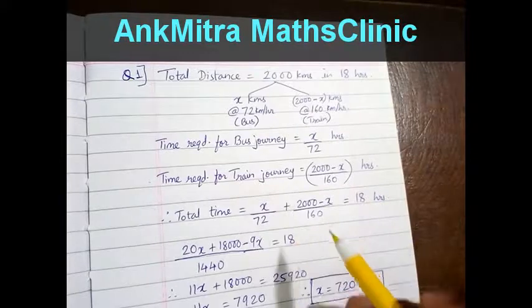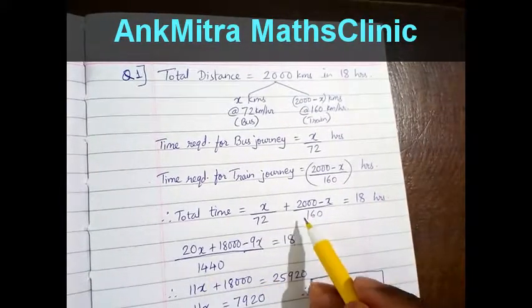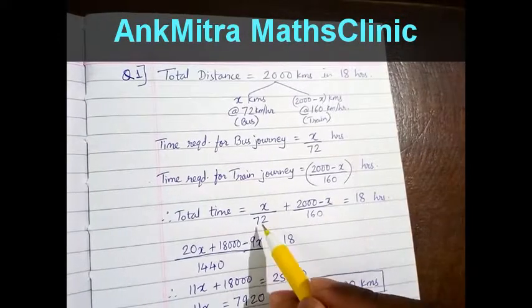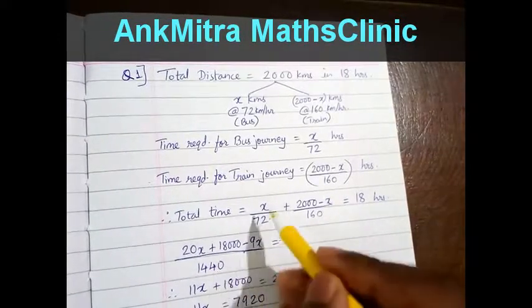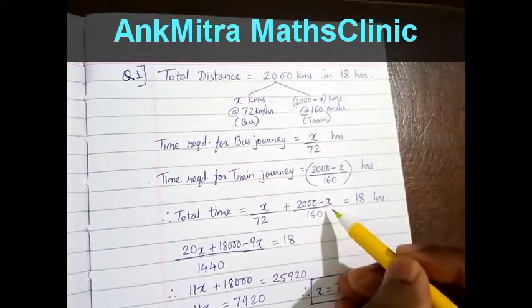To solve this we need to first bring this to a common denominator which comes to 1440. So to reach 1440 we will multiply this fraction by 20 and this fraction by 9.